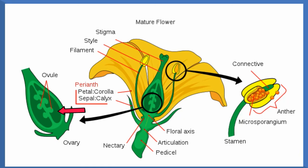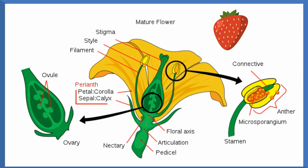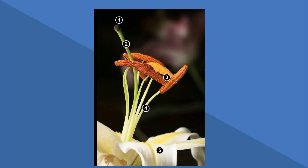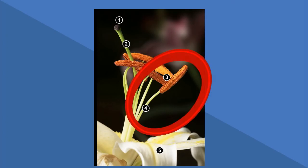Upon being fertilized by pollen, the ovules will eventually grow into a seed, and in fruit plants it will grow into a seed and the surrounding fruit. The male organ of the flower is called the stamen and it has two parts.